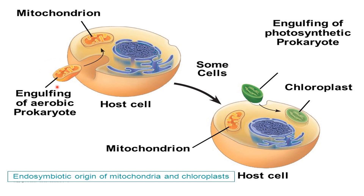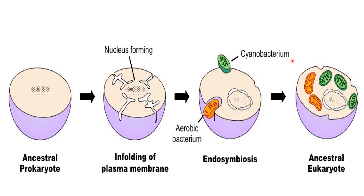Mitochondria developed first because all eukaryotic cells have mitochondria. Eukaryotic cells that can do photosynthesis can have both mitochondria and chloroplasts. They were engulfed by the process of phagocytosis. Phagocytosis is the process by which certain living cells ingest or engulf other cells or particles. The cells which perform the process of phagocytosis are called phagocytes.